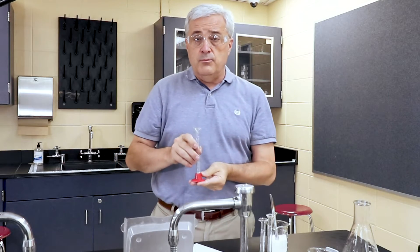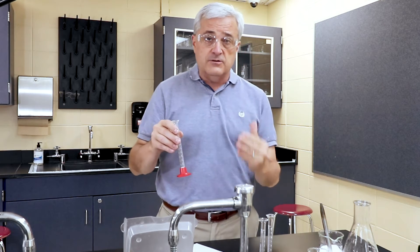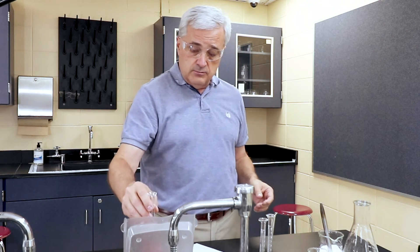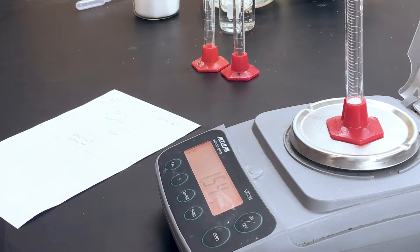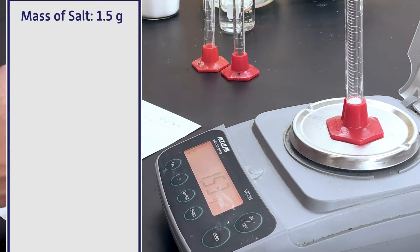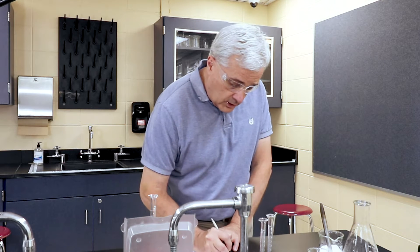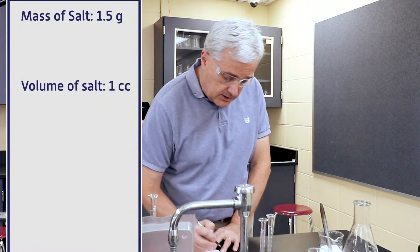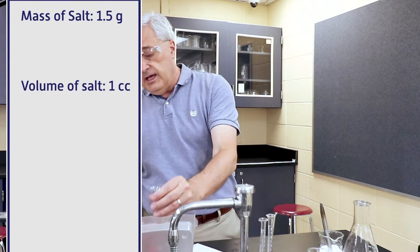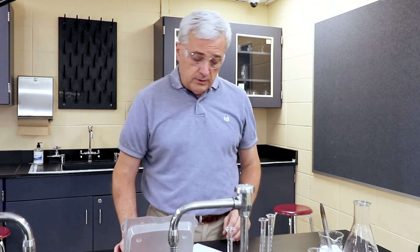Now normally you would find the mass of the salt, not the volume. But for the purposes of this, with the solution, we wanted to do that. Putting this on the scale, I come up with 1.5 grams of salt, and one milliliter, which is a cc, a cubic centimeter. All right, so we have the salt: 1.5 grams.